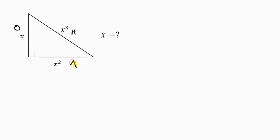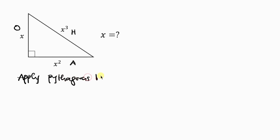We can call this the adjacent. It doesn't matter their position — we can also have here to be the adjacent and here to be the opposite, depending on which angle we are considering. Now since it is a right angle triangle, we're going to be applying what we call the Pythagoras theorem. Pythagoras theorem, which we are familiar with, says that the square of the hypotenuse is equal to the sum of the squares of the opposite and the adjacent.